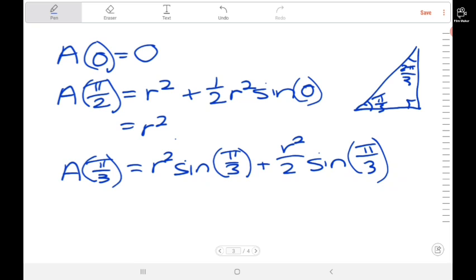So this triangle is half of an equilateral triangle. We get 1 here, a half over here, and root 3 over 2. So sine of pi over 3 is root 3 over 2.